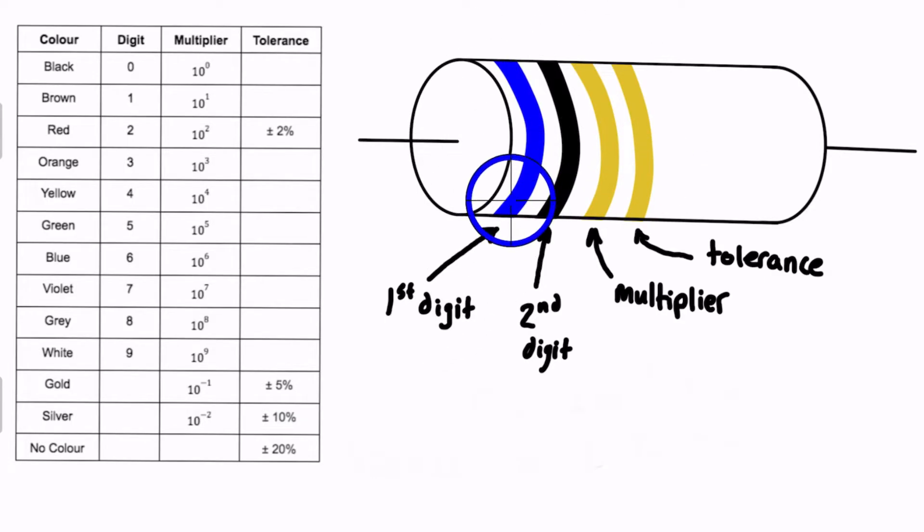And do remember that the first color band represents the first digit of the resistance, the second color band represents the second digit, the third band represents the multiplier, so it'll be times 10 to the power of one of these guys, and then the fourth band represents the tolerance, so the plus or minus percentage, because these come with a little bit of a range of accuracy.